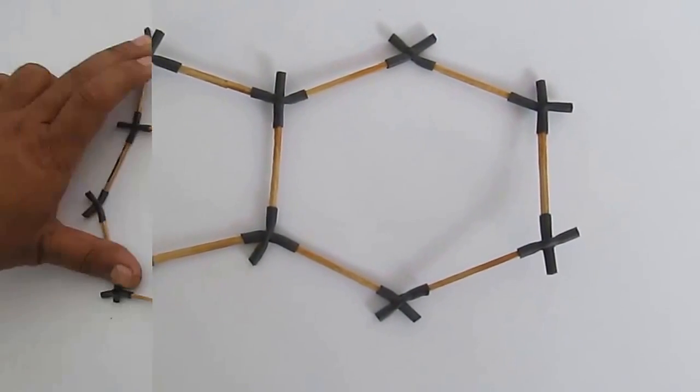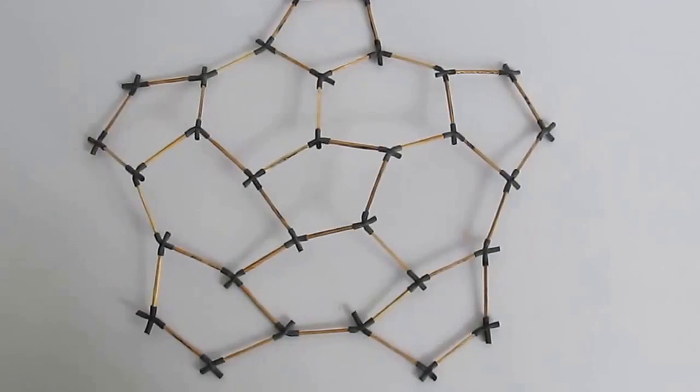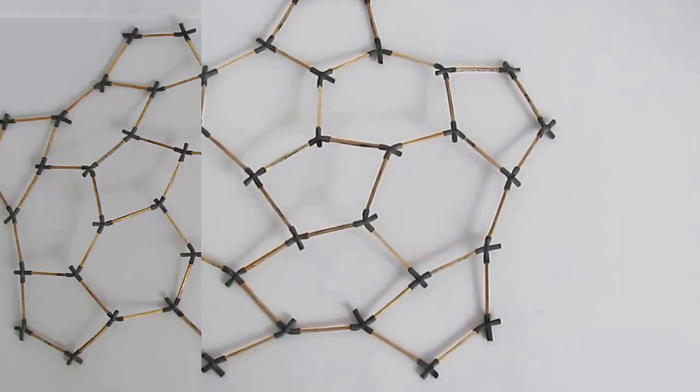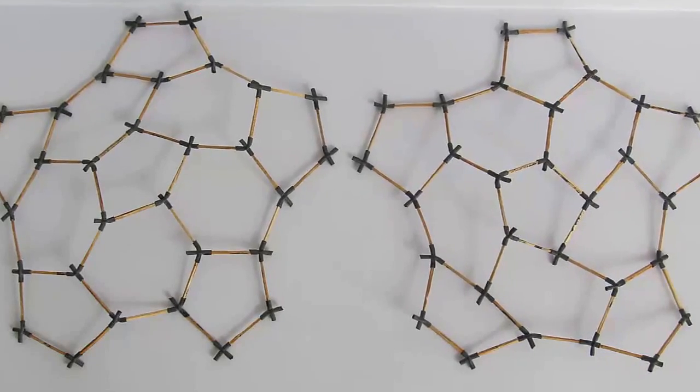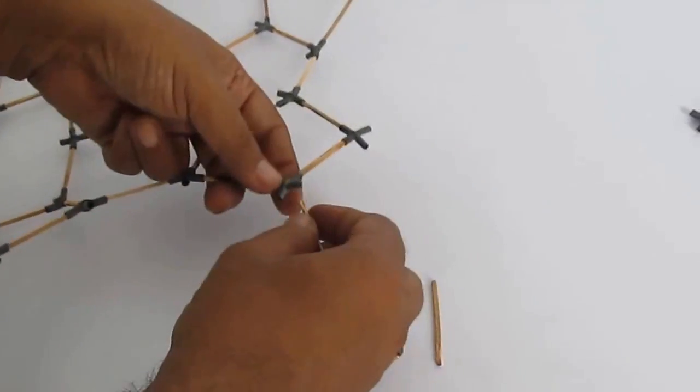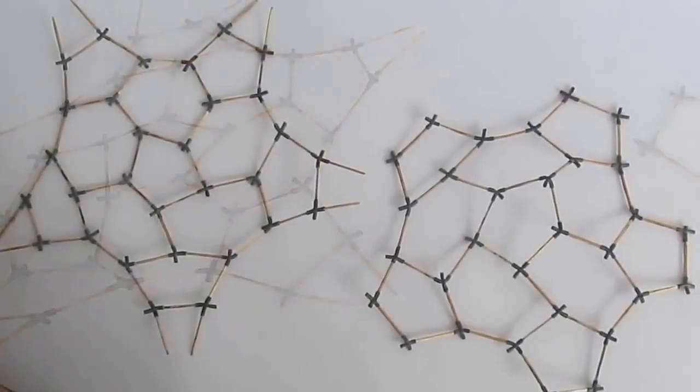So we have made 6 pentagons and 5 hexagons in this structure. We will make 2 of these. Now in one of these structures, we will insert 2 sticks at the end of each of these 5 pentagons. Now we will just have to join these 2 structures together and our football is ready.